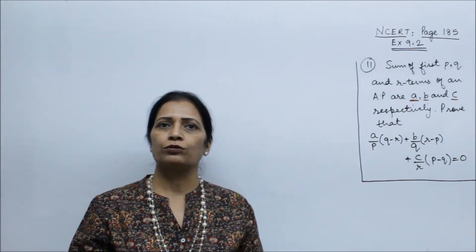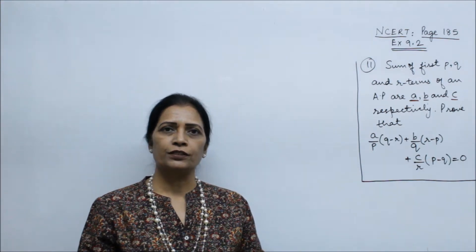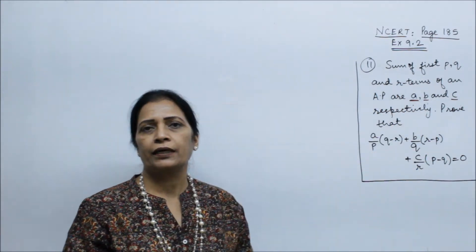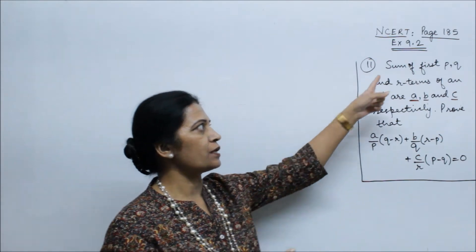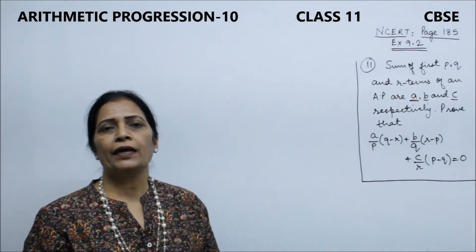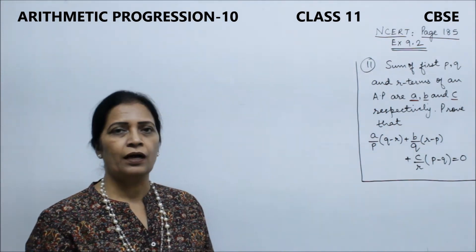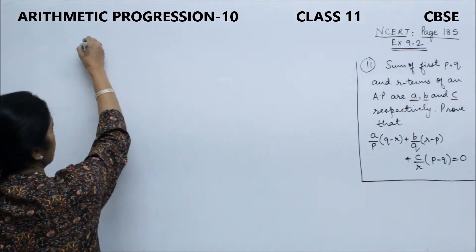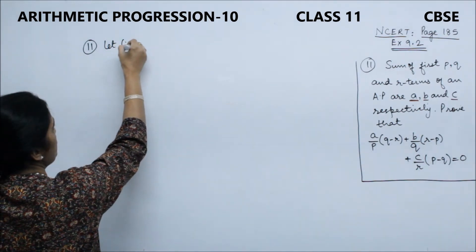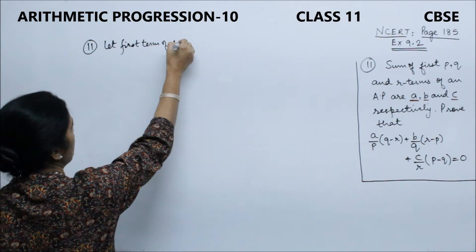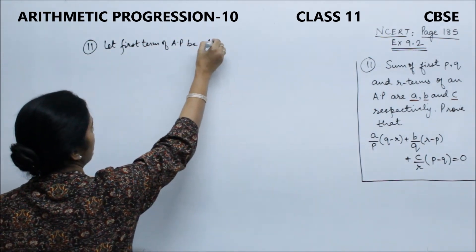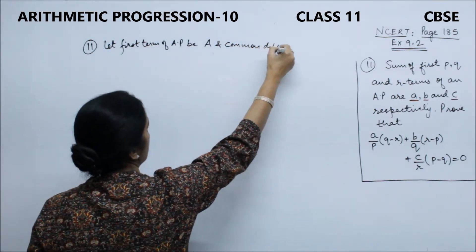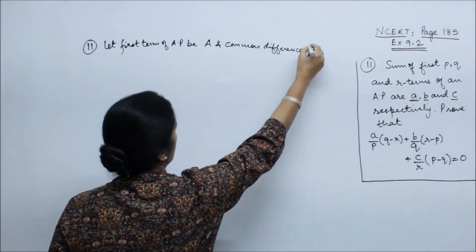Now, we generally have arithmetic progression with a first term. Since the letter A is already used in the question as sum of first P terms, we have not assigned A to the first term. So let the first term of the AP be capital A, and common difference be D.